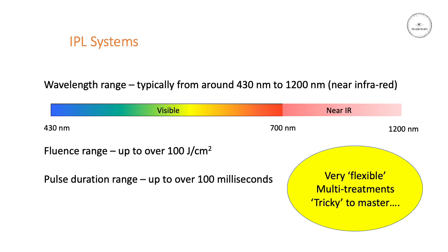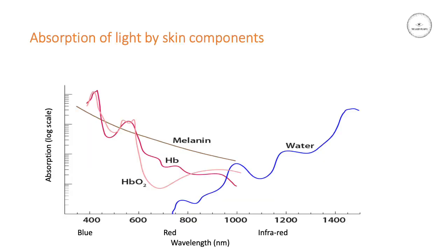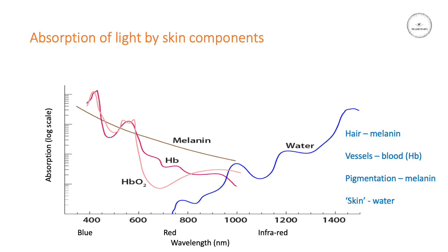But it also makes it trickier to master since you have much more choice compared to typical laser systems. So let's look at the absorption characteristics for various chromophores in the skin. Here we can see the absorption curves for water, melanin, deoxyhemoglobin and oxyhemoglobin, and what this tells us is how well these chromophores absorb across the different colours of light at different wavelengths. Melanin absorbs pretty strongly down at the blue end of the spectrum, but it decreases as the wavelength increases up to around 1000 nanometers, where it absorbs much less strongly than at the blue end of the spectrum.